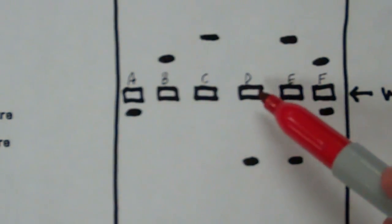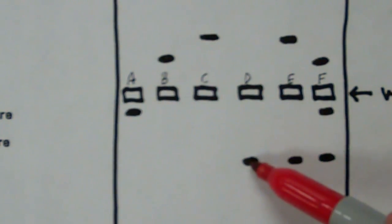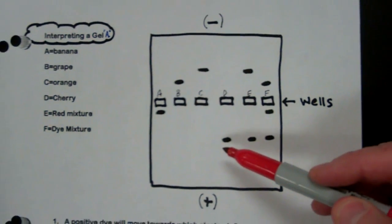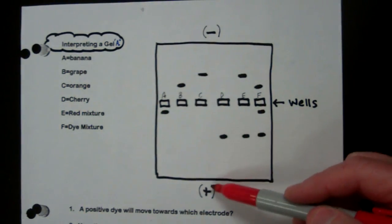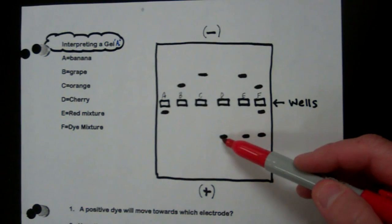Let's look at D. D is cherry. It moved really far. It's a negative molecule, because if you can see, remember, it's moving to the positive. So this negative molecule moved really far.